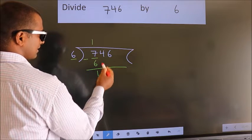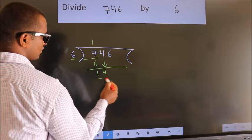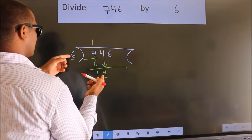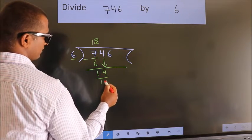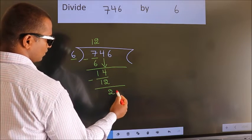After this, bring down the beside number. So 4 down. So 14. A number close to 14 in 6 table is 6 twos, 12. Now we subtract. We get 2.